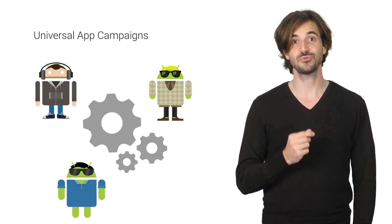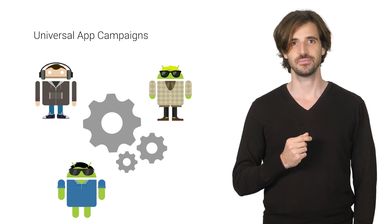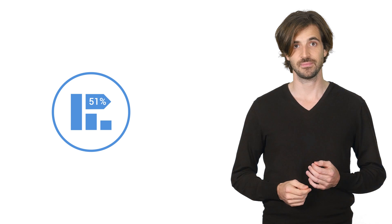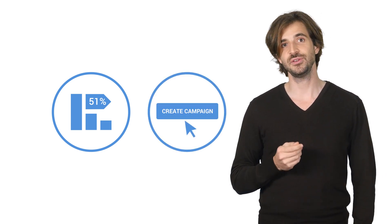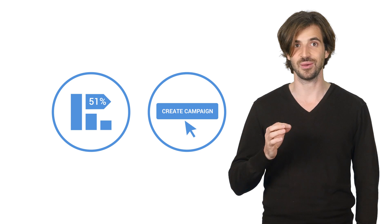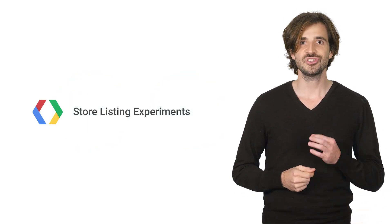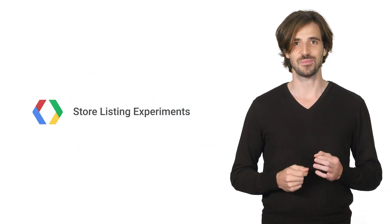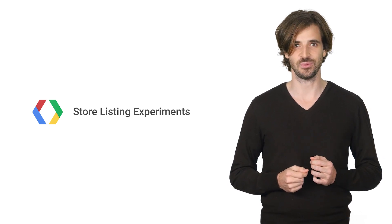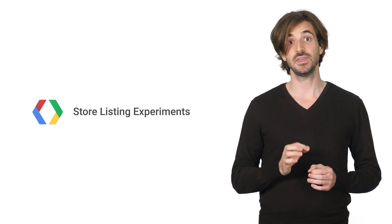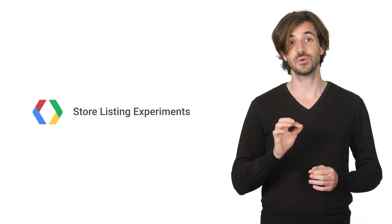With the performance report, you can understand and optimize your acquisition channels, whether organic or paid. And with universal app campaigns, you'll be able to find users interested in your app in no time. Next, you should check out our video on store listing experiments. You will learn how to run A/B tests on your Play Store listing and increase your installs. This could multiply the effect of all your user acquisition efforts. Thanks for watching.